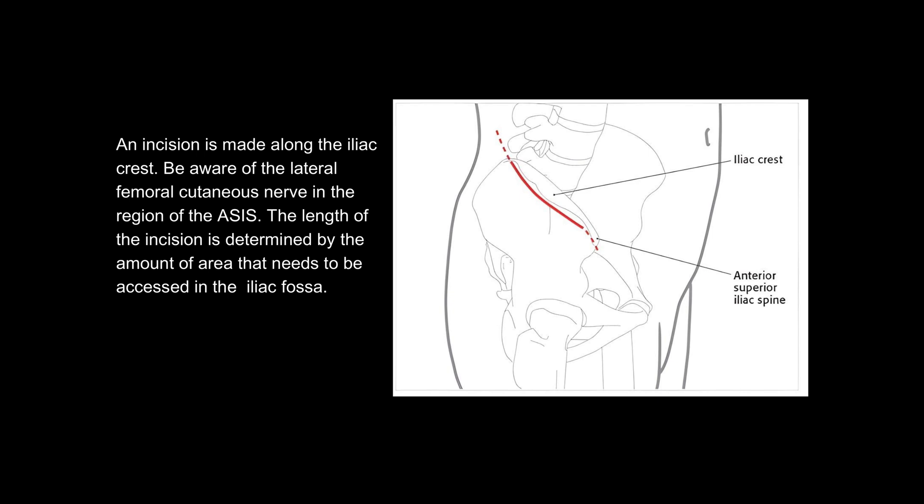An incision is made along the iliac crest. Be aware of the lateral femoral cutaneous nerve in the region of the ASIS. The length of the incision is determined by the amount of area that needs to be accessed in the iliac fossa.